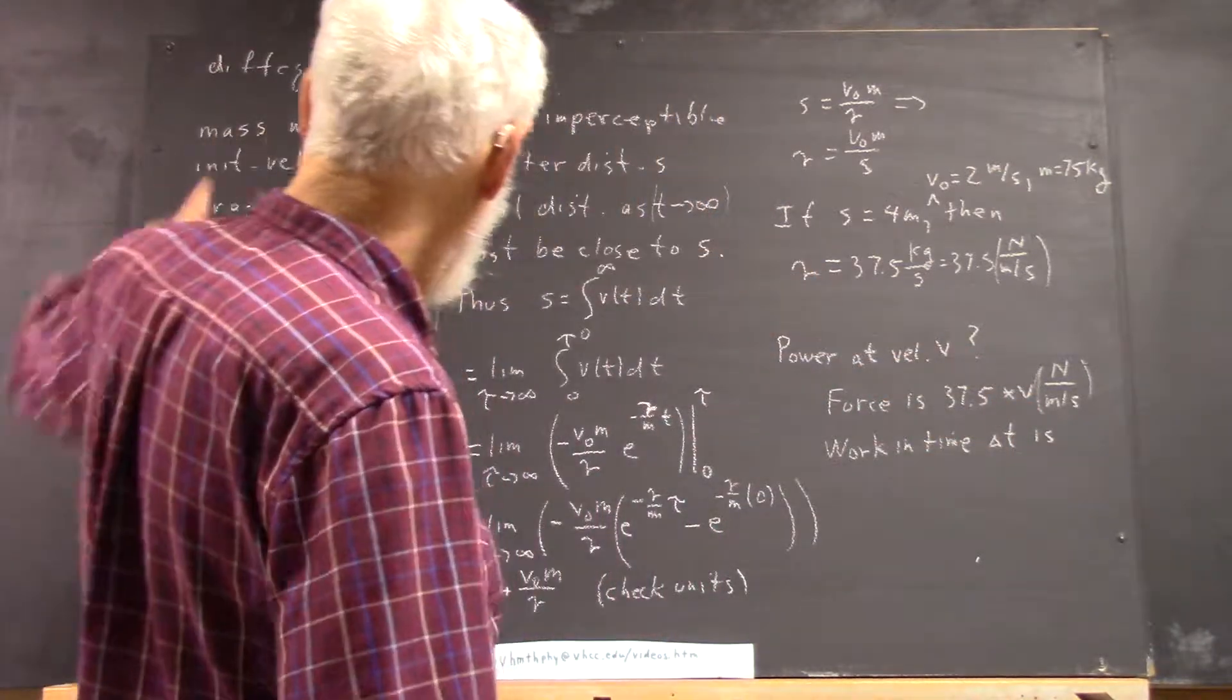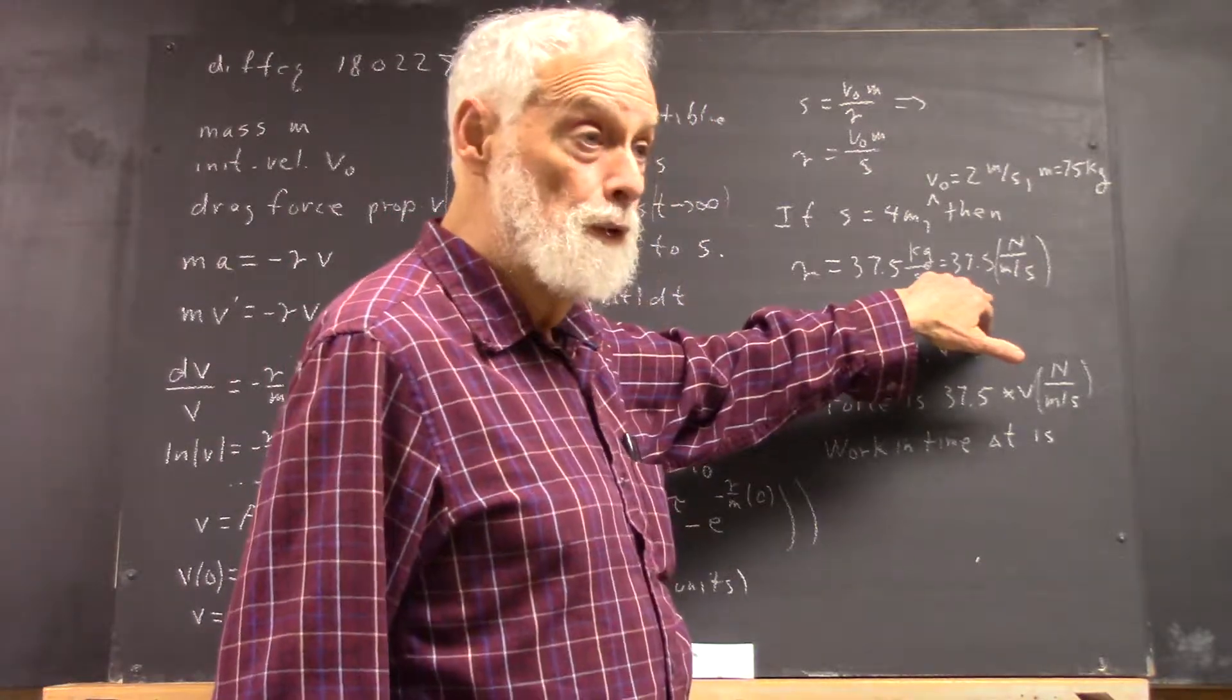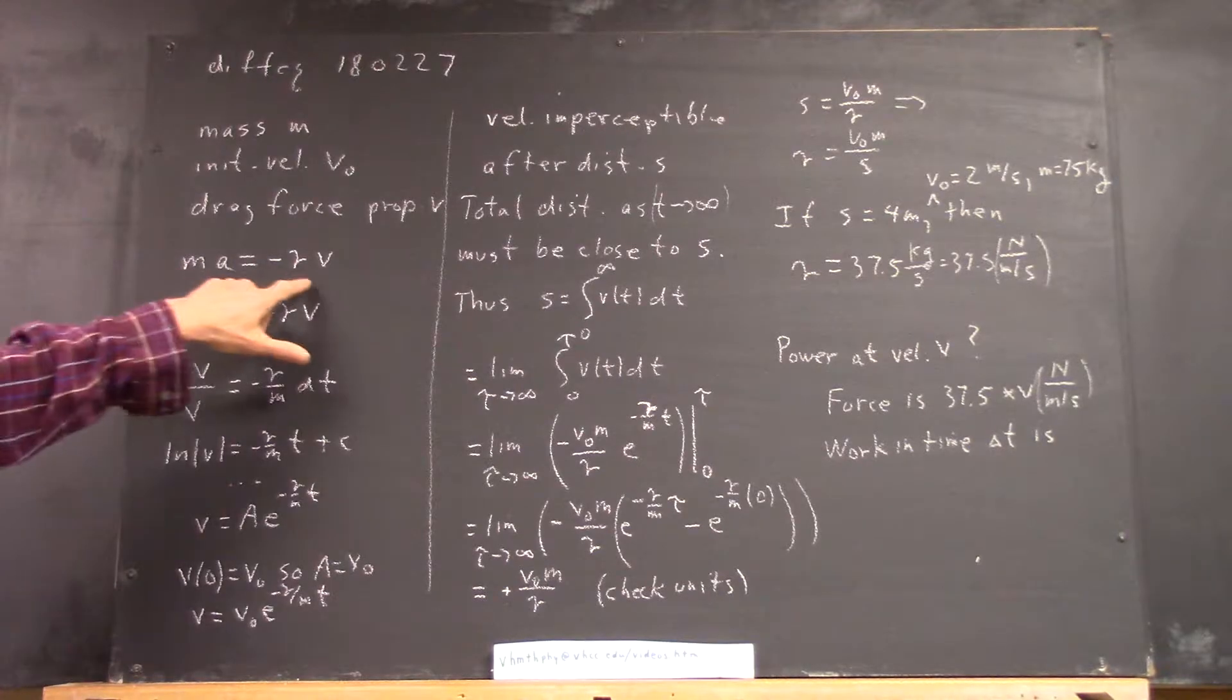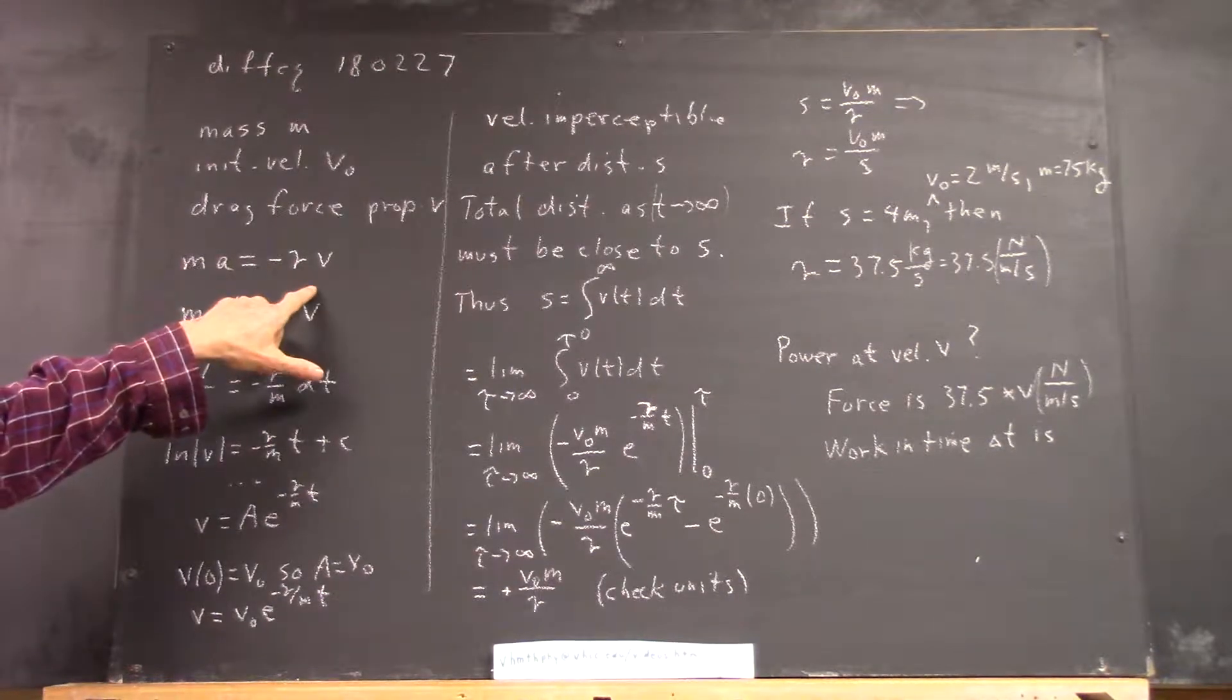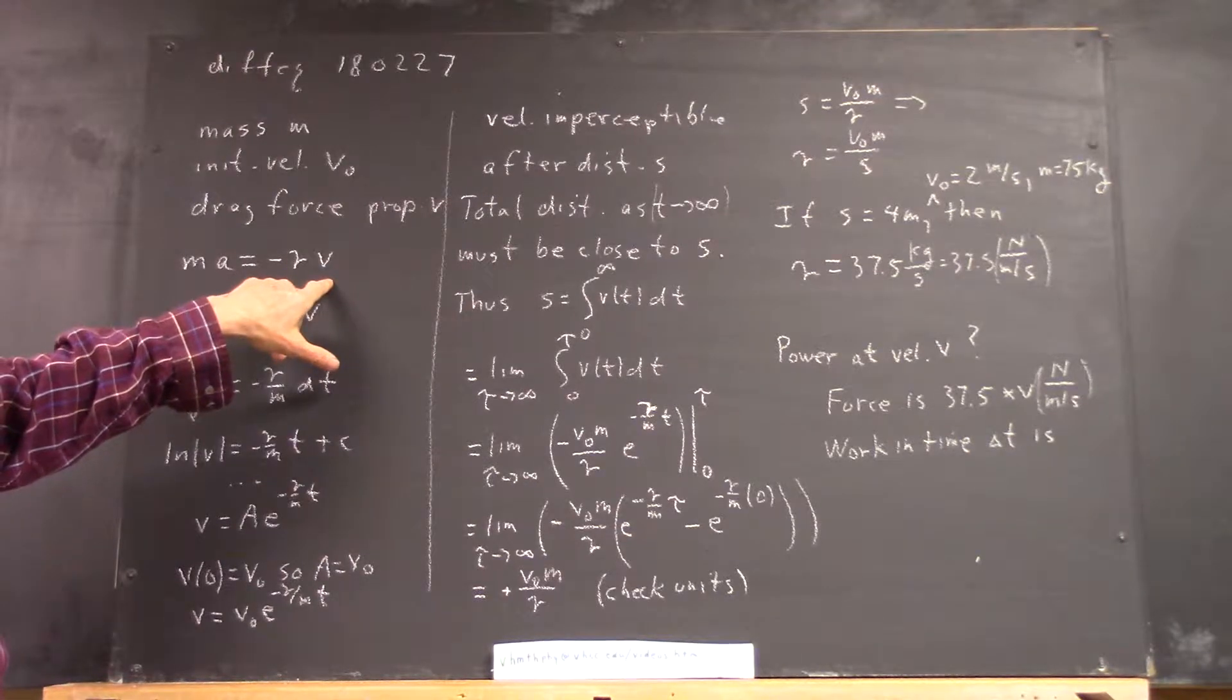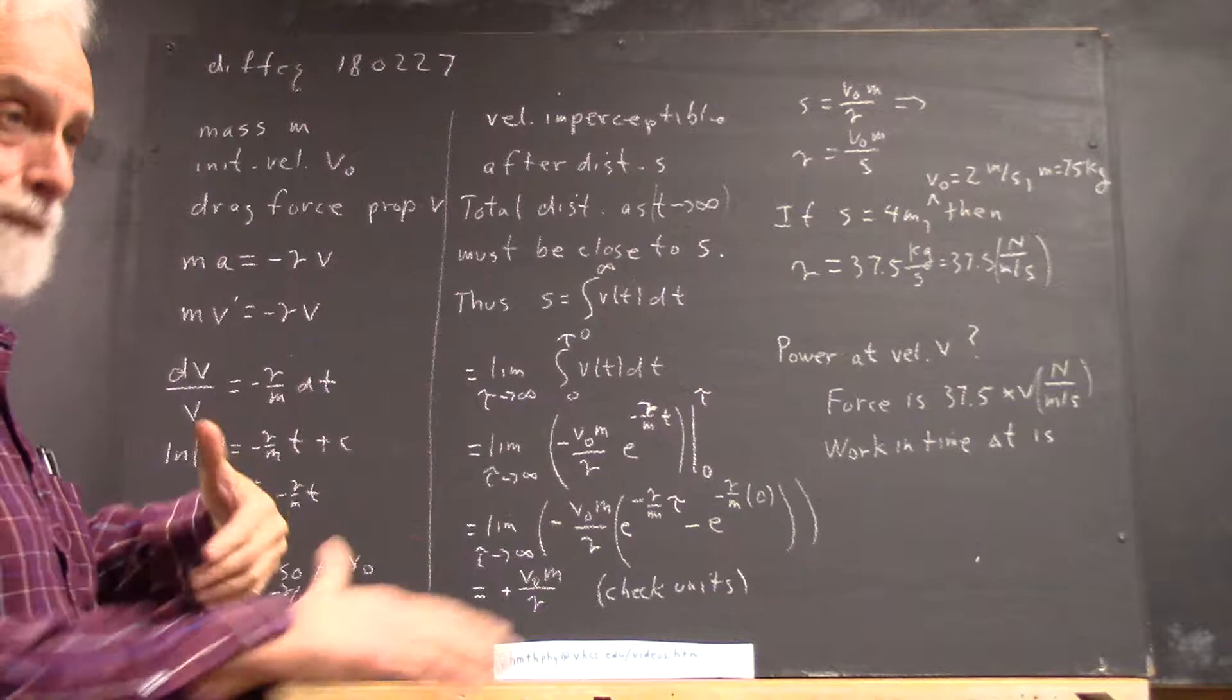We used all this information with velocities and everything to figure out what my drag coefficient is. Remember, we started with the assumption that mass times acceleration is a product of a drag coefficient times velocity, and the negative sign because it's opposing my motion.